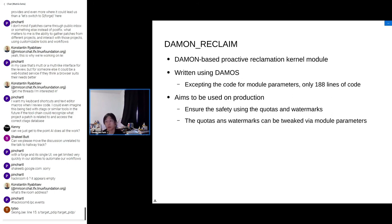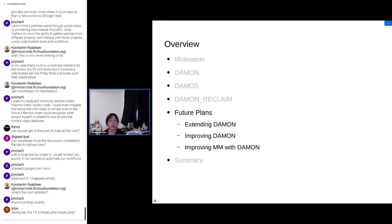If you exclude code for module parameters for user-specific customization, it uses only 188 lines of code. It aims to be used in real production. We ensured safety using the quotas and watermarks features, and the quotas and watermarks can be tweaked via module parameters, which account for about half the source code.